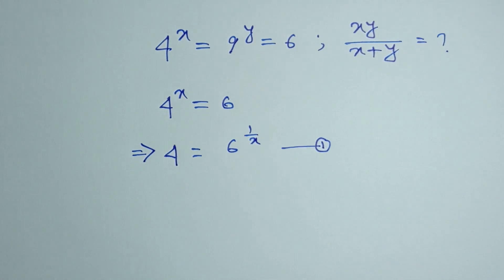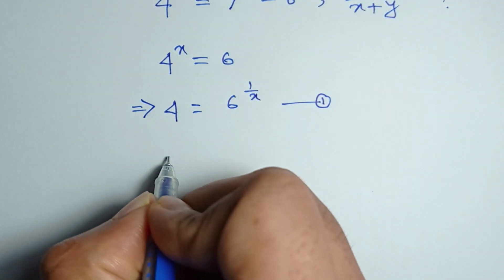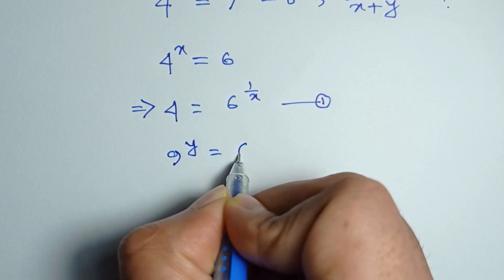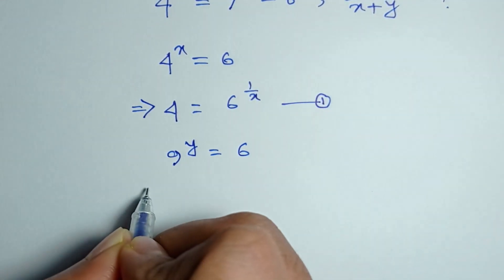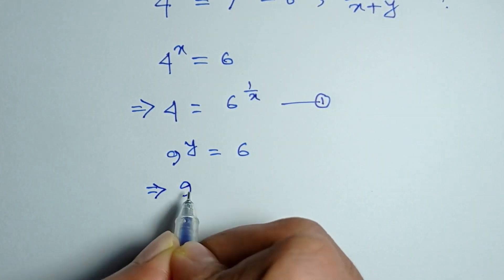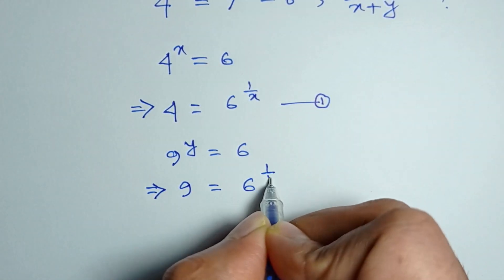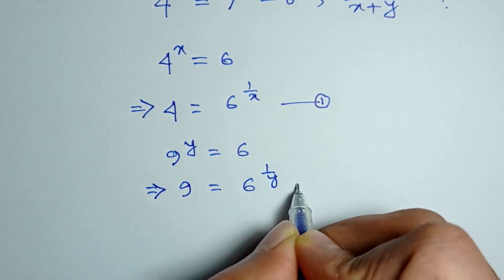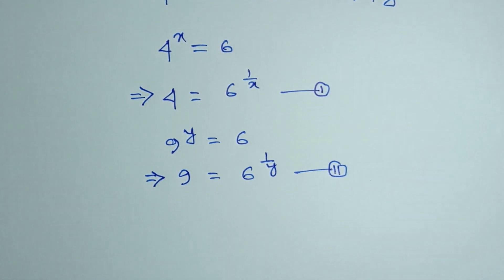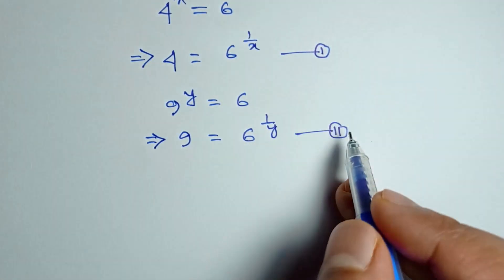Again, we can write 9 to the power y is equal to 6, so 9 is equal to 6 to the power 1 by y — equation number 2.